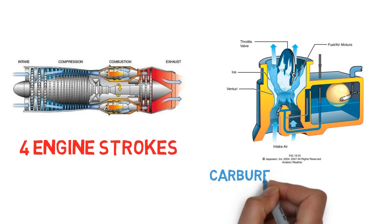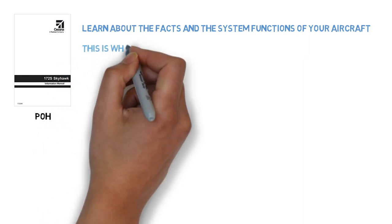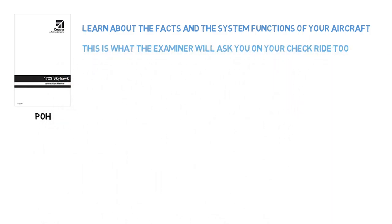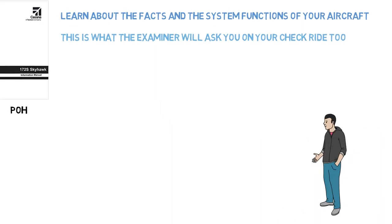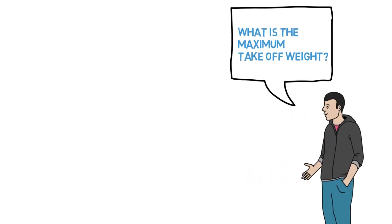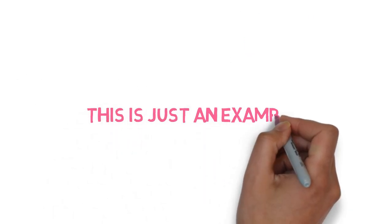That is part of the aircraft system. I train in a Cessna 172. You need to learn about the systems and functions of your aircraft. That is what the examiner will ask you on your checkride. Maybe he'll ask what is the maximum takeoff weight, and you can refer to the POH—it's about 2450 pounds. This is just an example of a small aircraft system.